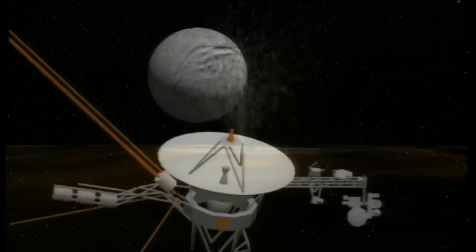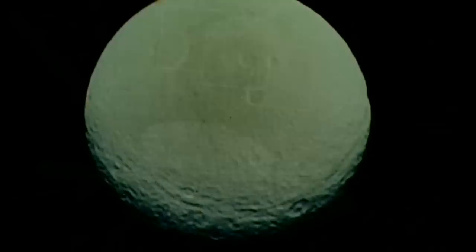La destination suivante de Voyager, Thétis, plus de 1000 km de diamètre, est un grand canyon que l'on aperçoit juste en dessous.